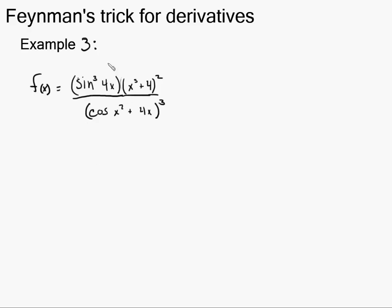Alright, this is my third example on using this trick I found in Feynman's Tips on Physics to take the derivative of a fairly complicated function here.